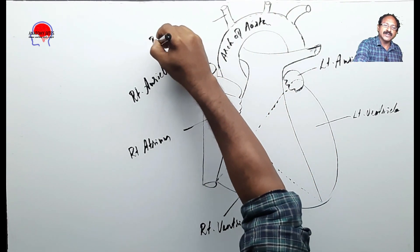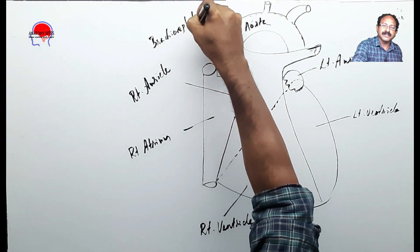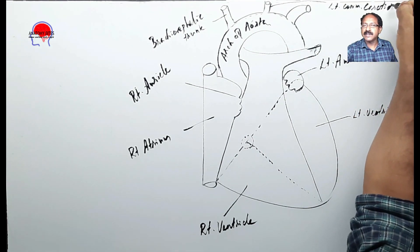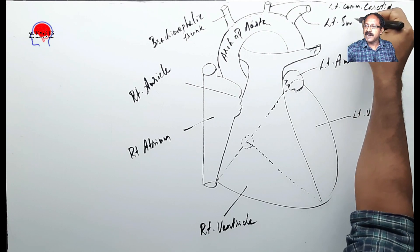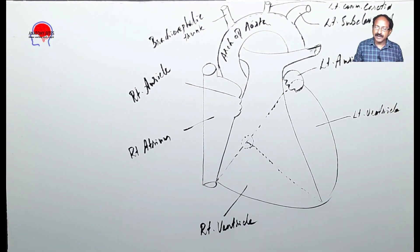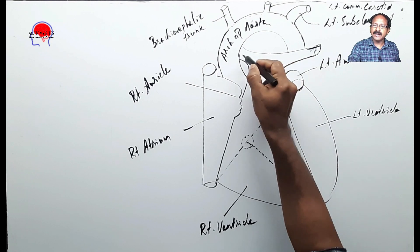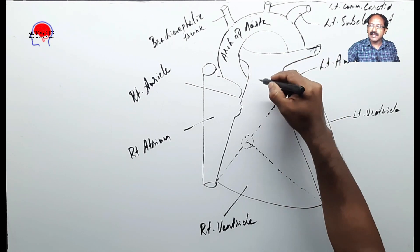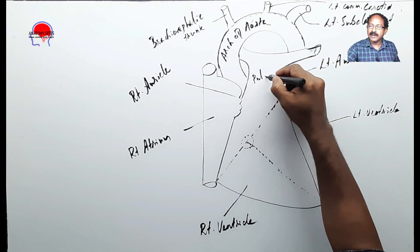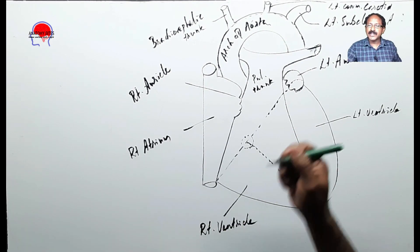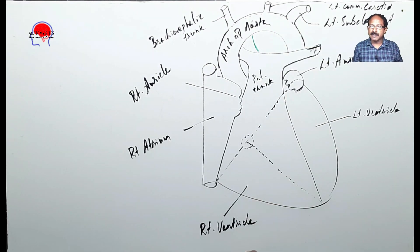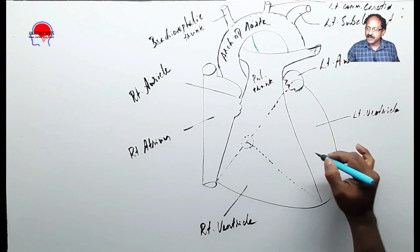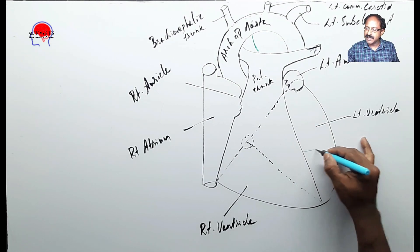This is the brachiocephalic trunk, this is the left common carotid, and this is the left subclavian. This is the left pulmonary artery, that is the right pulmonary artery, and this is the pulmonary trunk. There is a small connection between the pulmonary trunk and the arch of aorta which is named the ligamentum arteriosum.